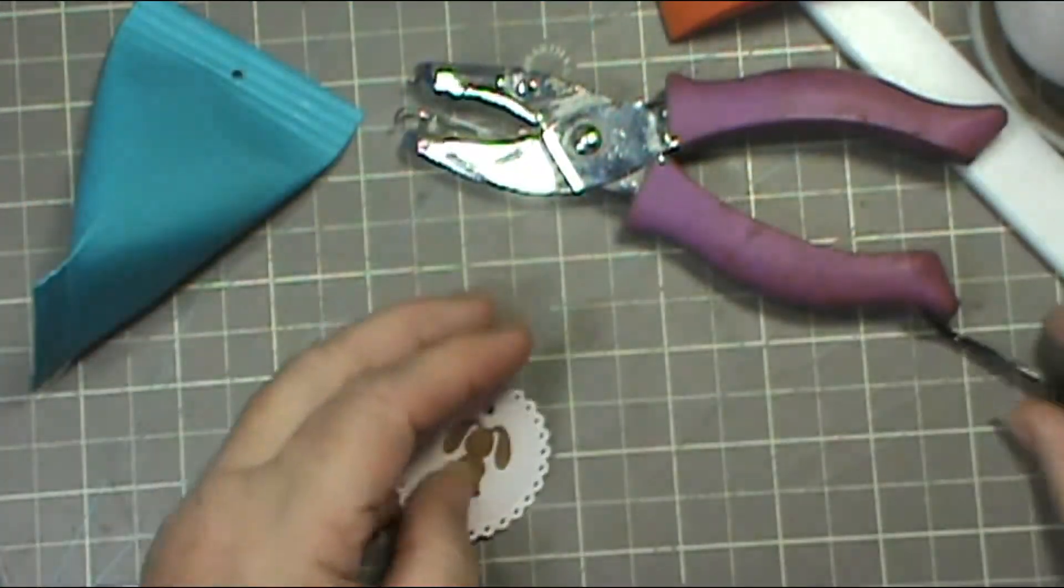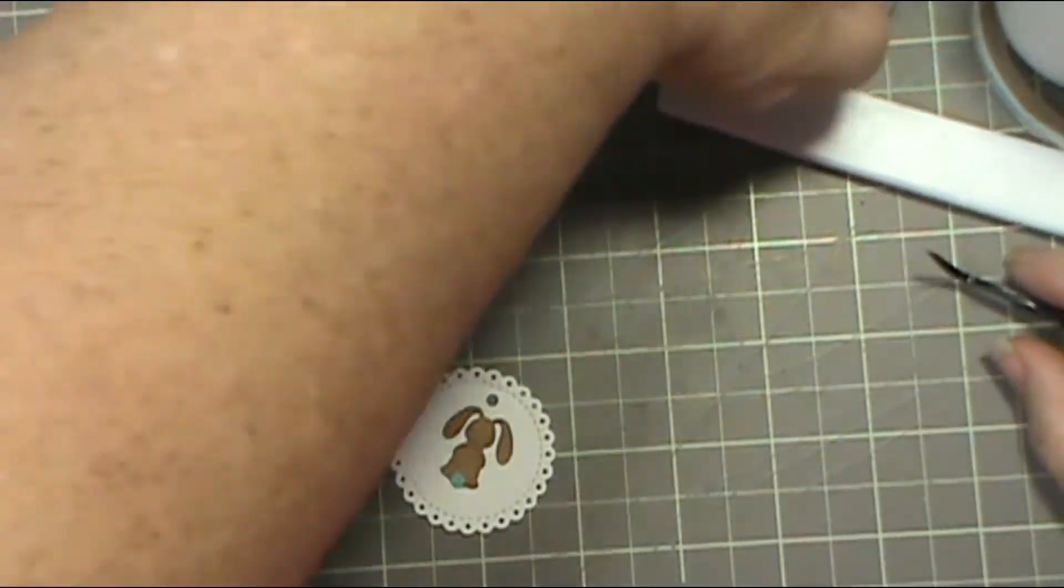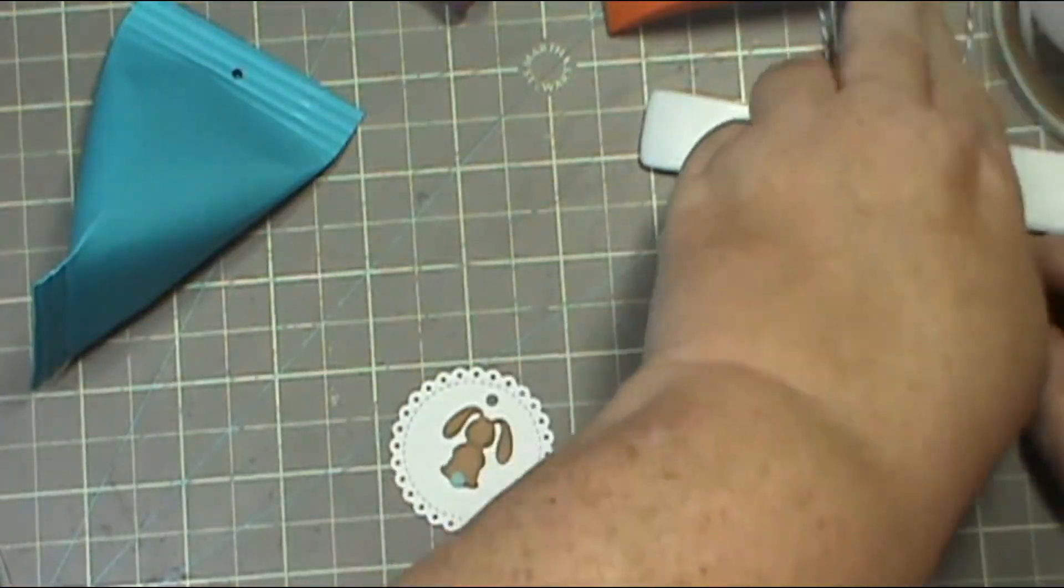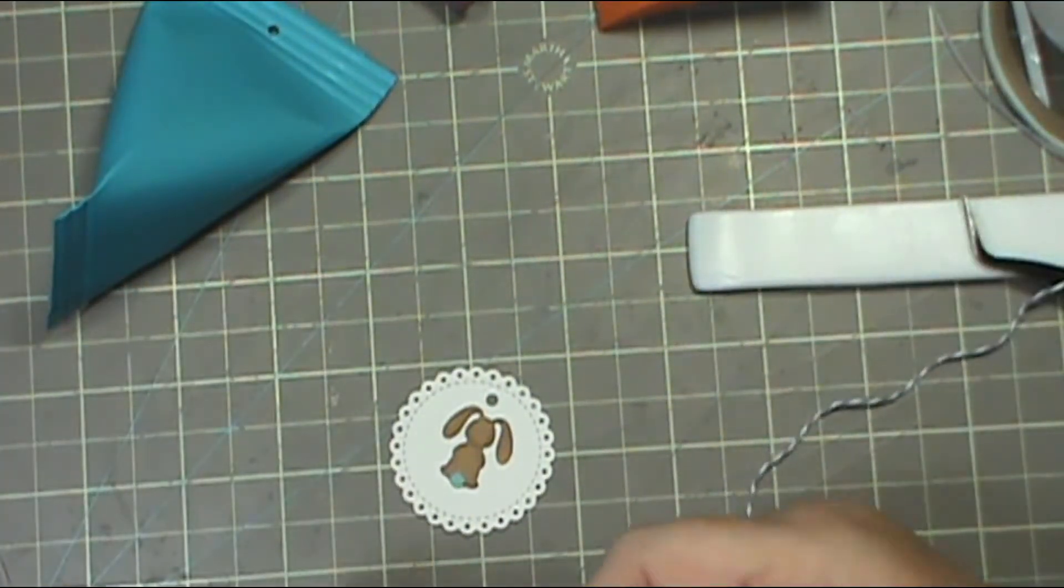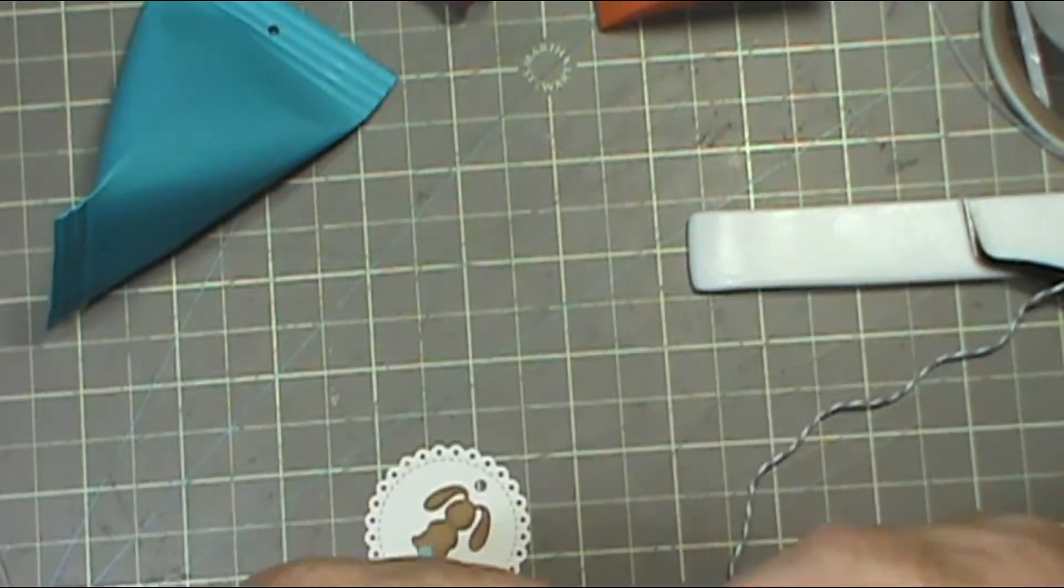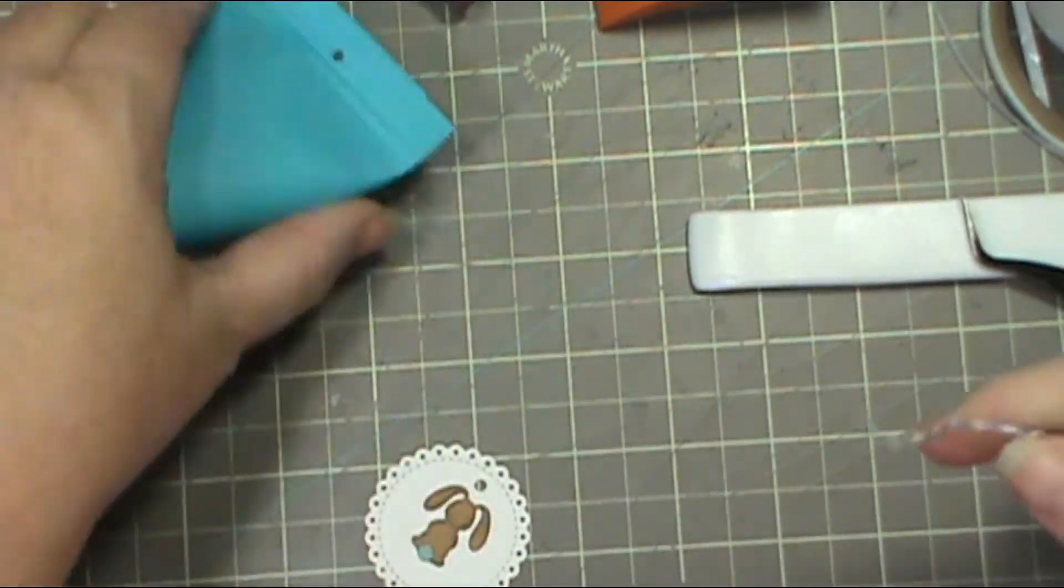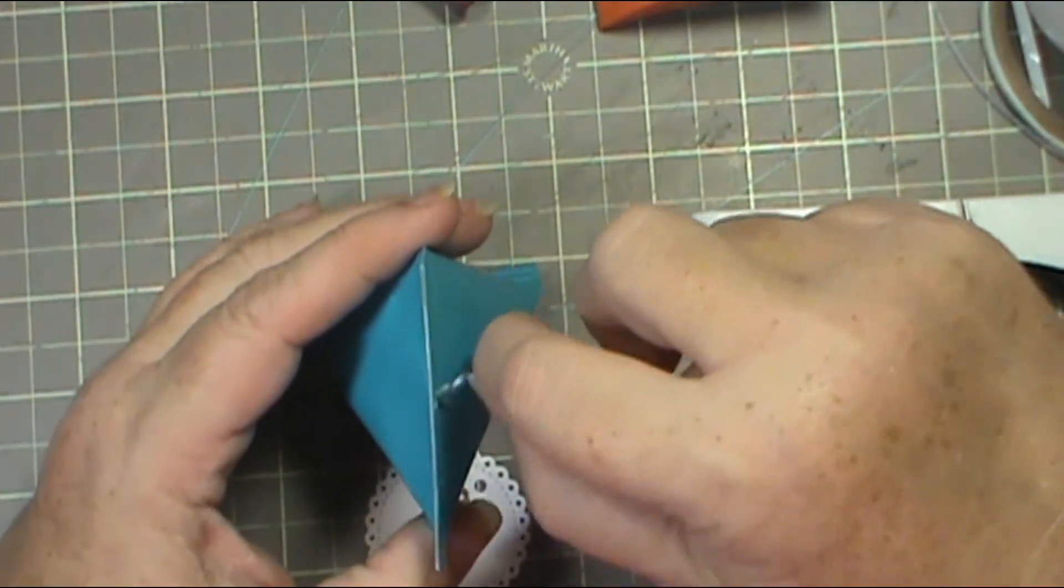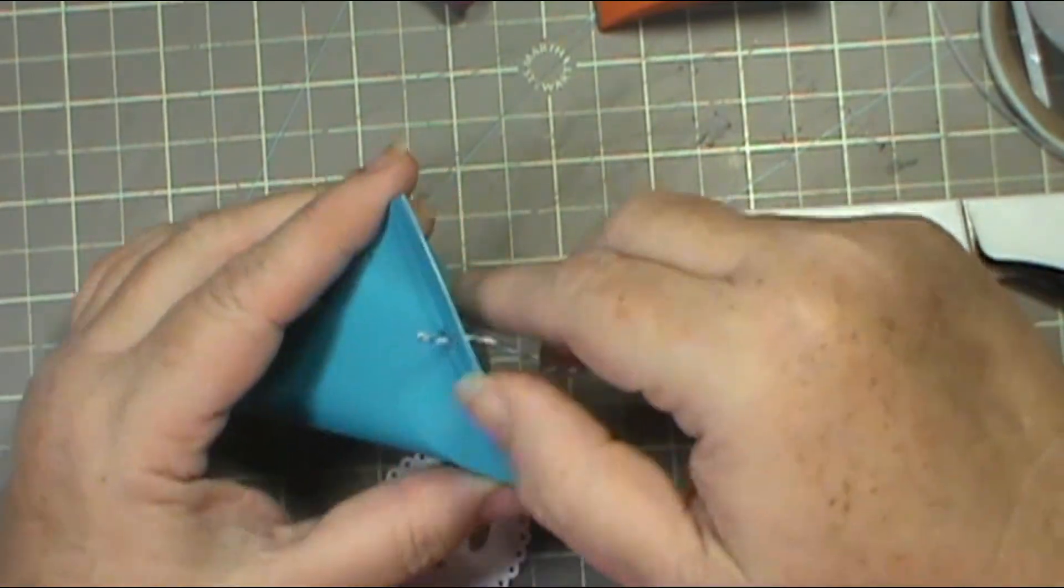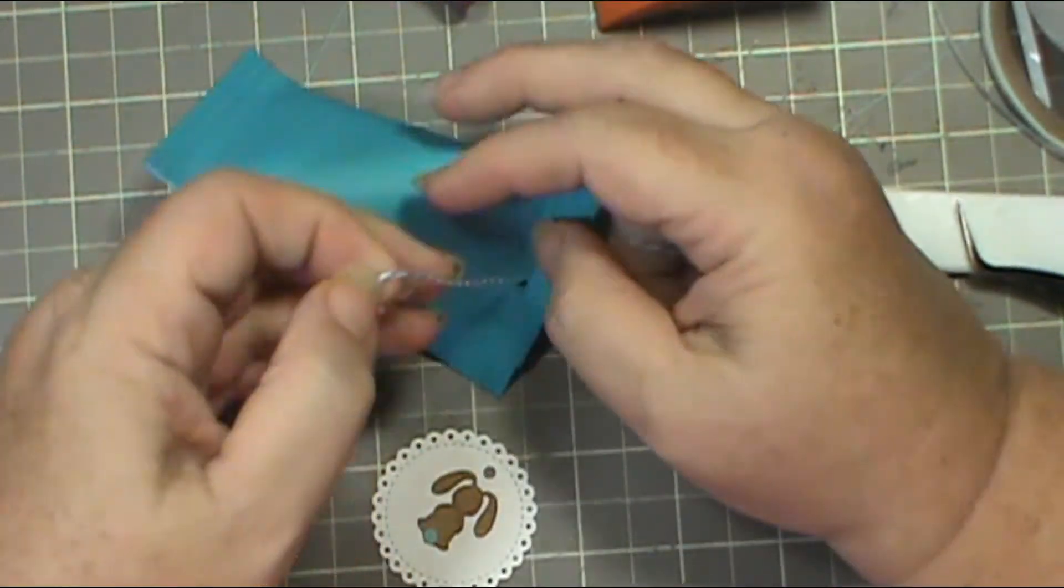If you had a smaller thread you could probably do that, but it just was not going to work for me. So I just go ahead and put another hole in because I'm using twine. But if you're using some kind of upholstery thread or something, that would probably work perfect.